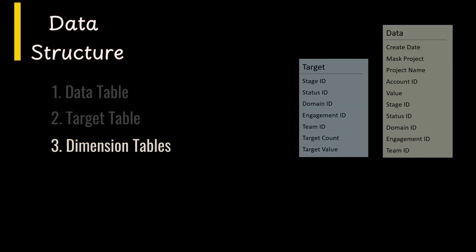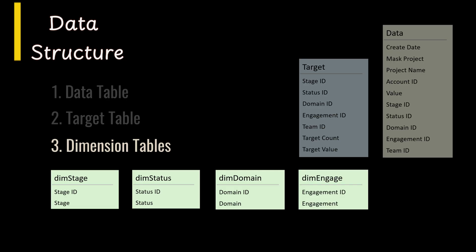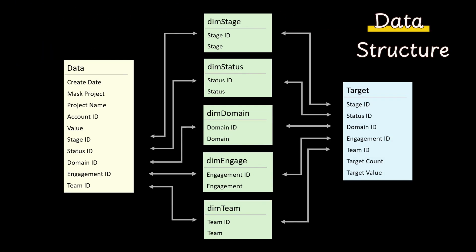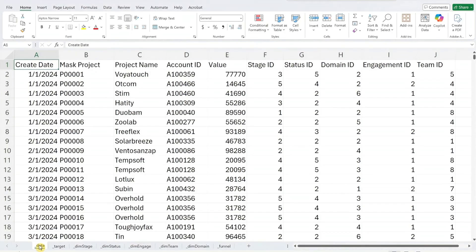The next five tables — stage, status, domain, engage, and team — are dimension tables that help categorize your data for filtering and analysis. All of these tables are connected by key fields, allowing the dashboard to pull everything together into one complete view. Now let's open the Excel file. The first data worksheet contains the sales opportunities data. Replace this sample data with your actual pipeline records.